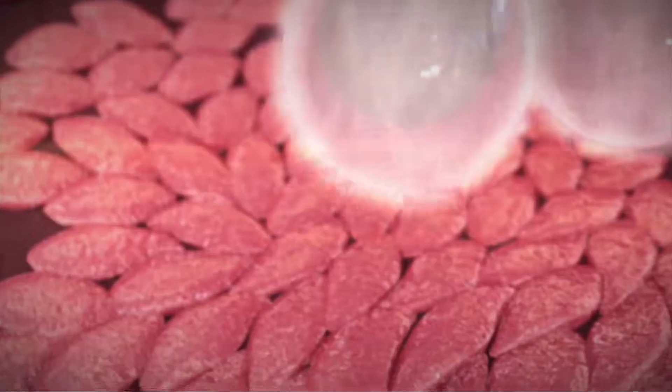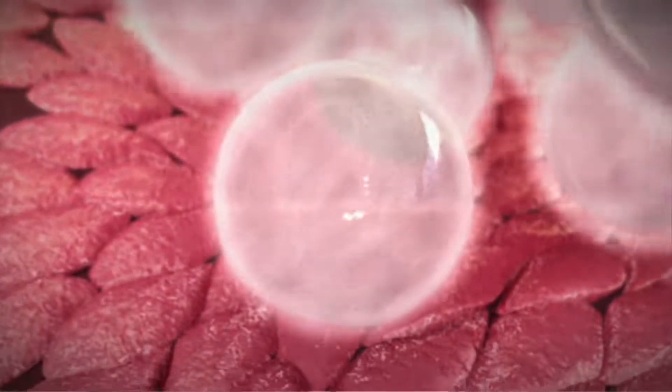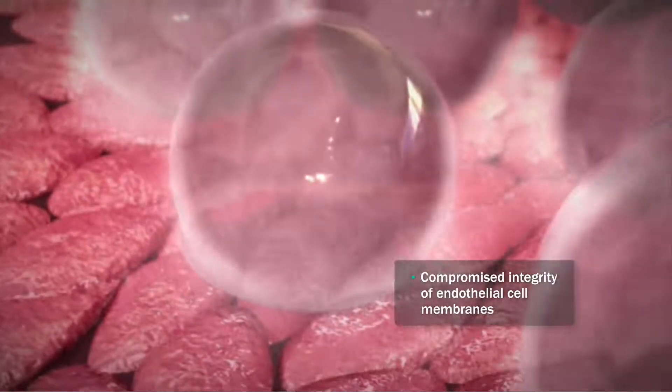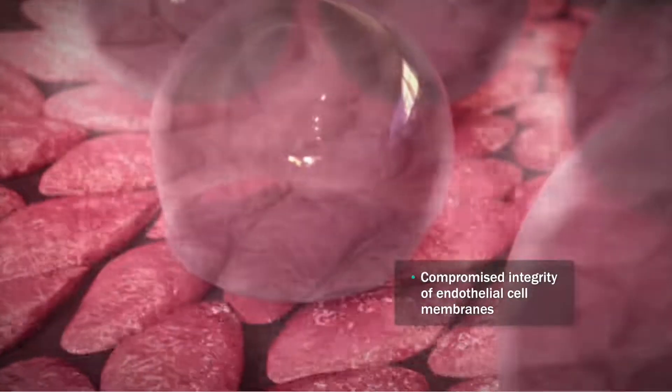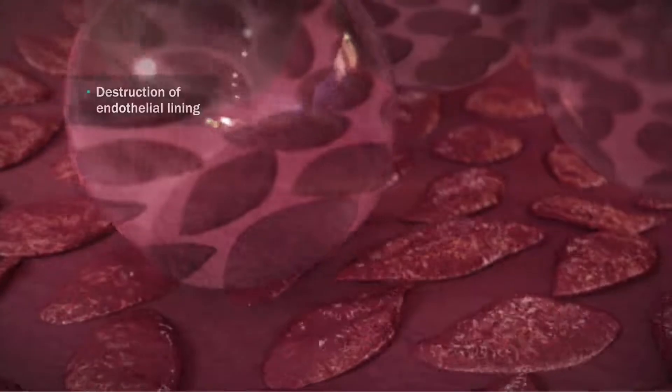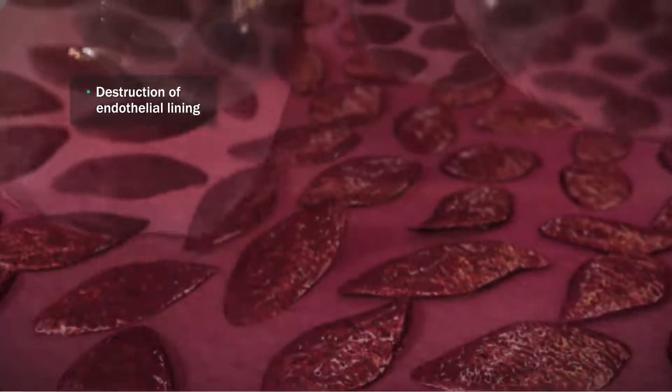The vein's endothelial lining is made from a single layer of flattened cells. The attachment of polydokanol's hydrophobic poles interferes with the integrity of the cell membrane and intracellular junctions. Consequently, the endothelial lining is quickly destroyed.